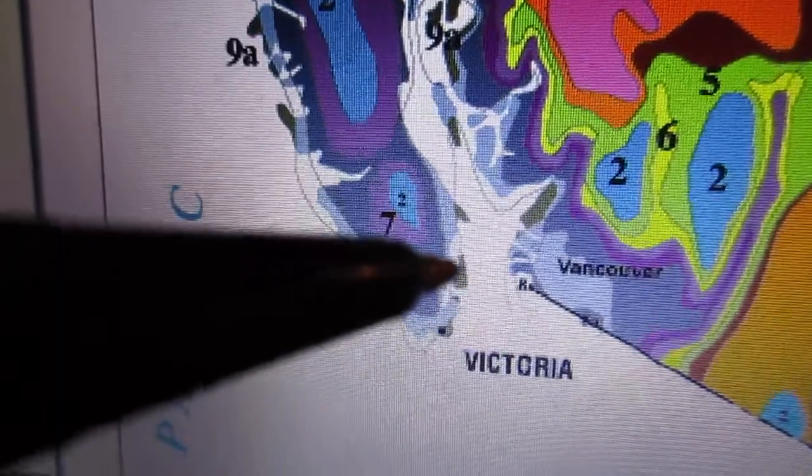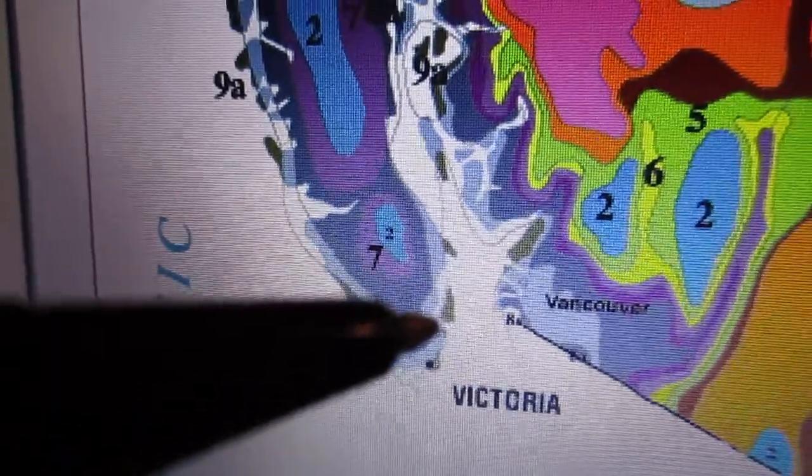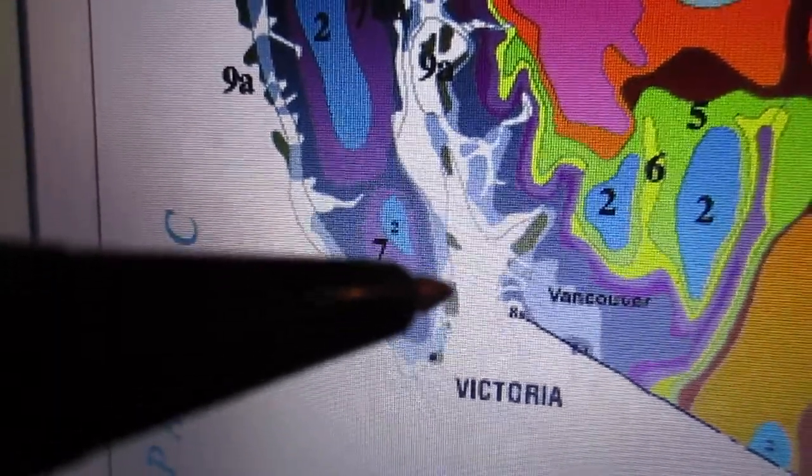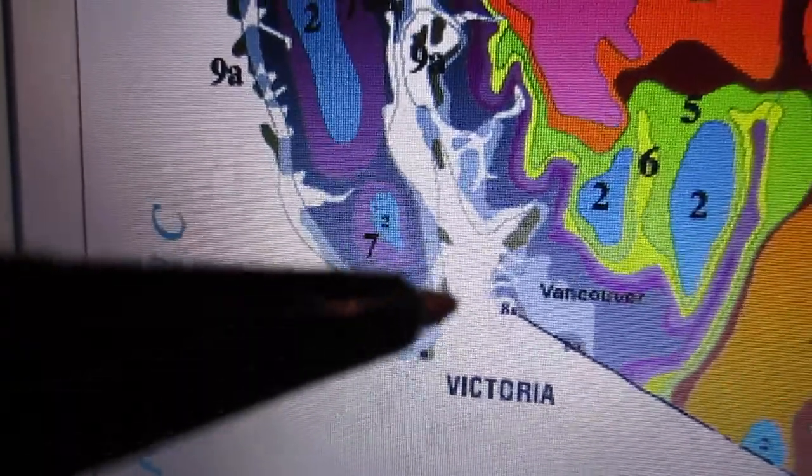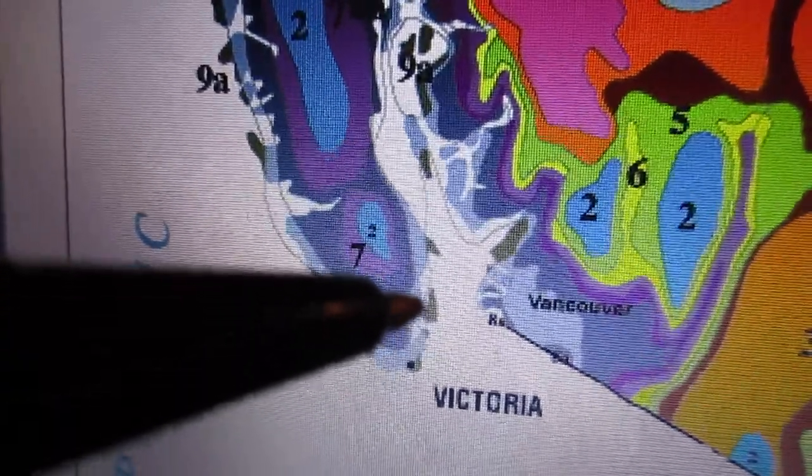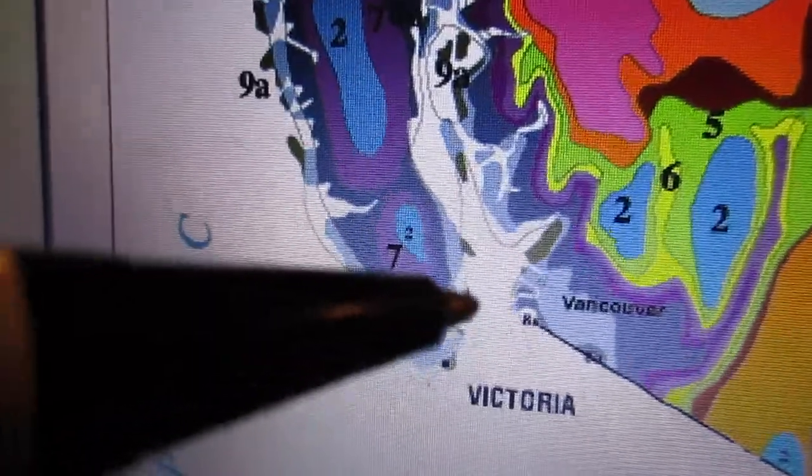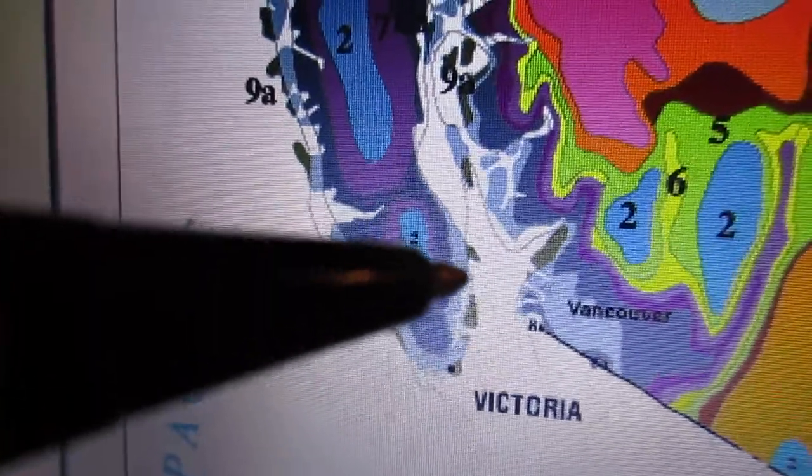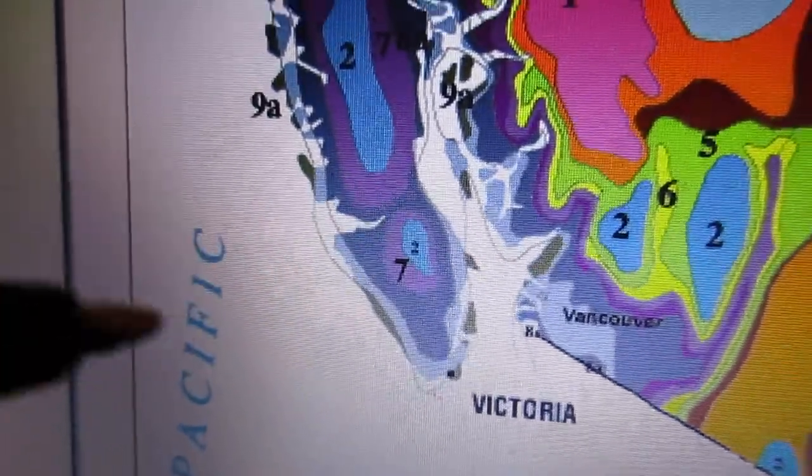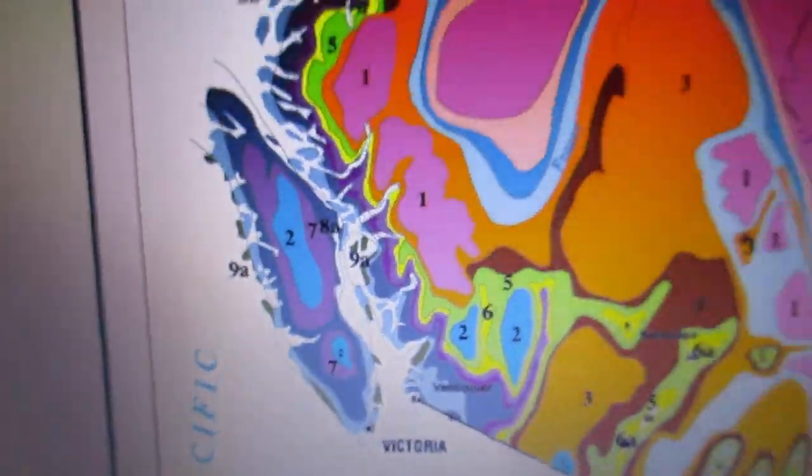The zones on our island range from 8a to 9a. The coldest areas here of course are the valleys in the winter and the mountaintops, and then the rest of it's 8b with pockets of 9a on Salt Spring Island. There's a 9a that juts out there too. Hope that helps.